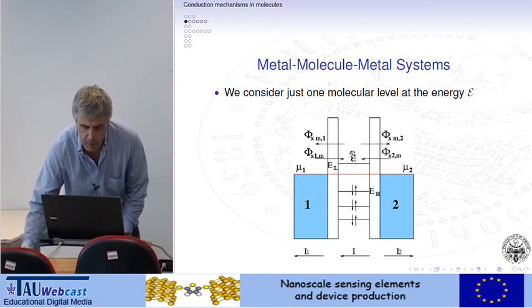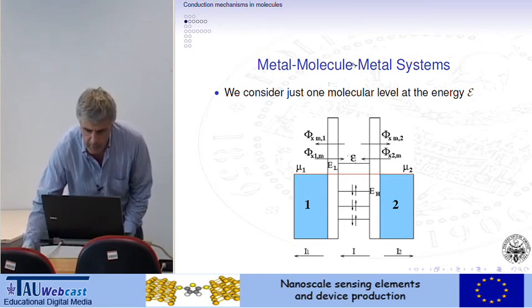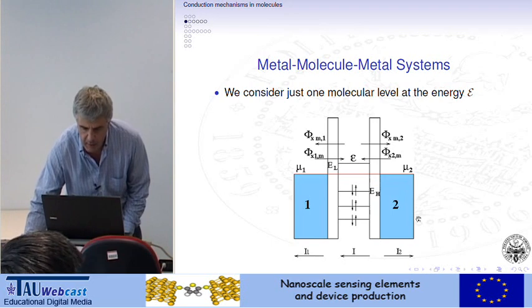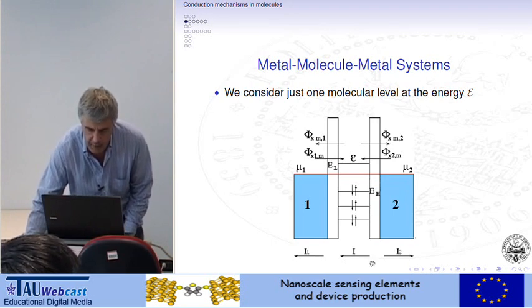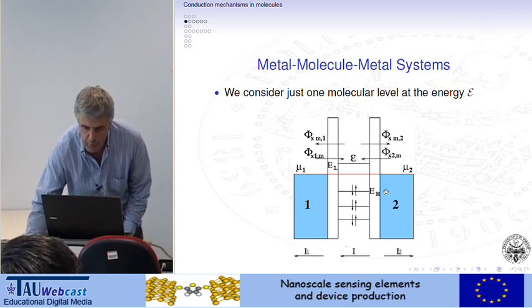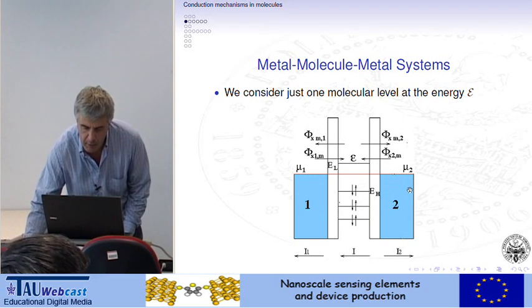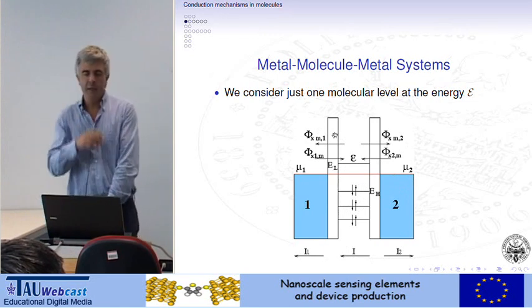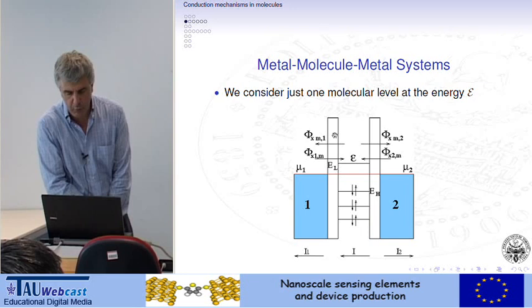We can also define currents I₁ and I₂. I₁ describes the total current flowing between the molecule and electrode one at this interface. I₂ describes the total current flowing through the interface from molecule to electrode two. To apply common current direction conventions, since electrode two is the drain, we prefer a positive current i in that direction — I₁ is positive, I₂ is negative, because the current is positive flowing from electrode two toward electrode one.